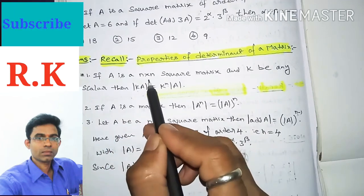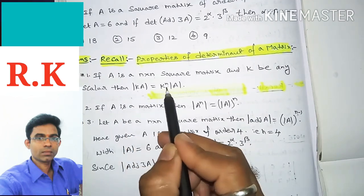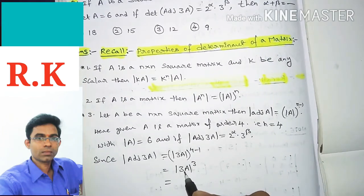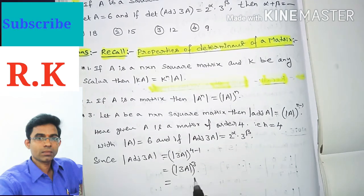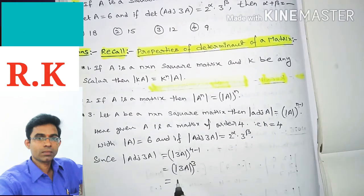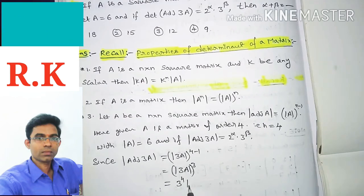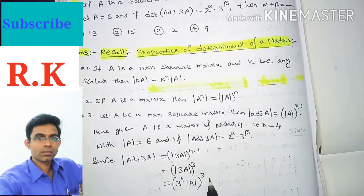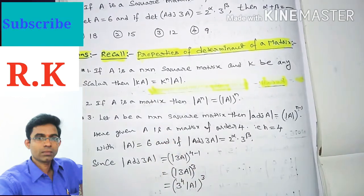By using the first property — whenever A is a matrix of order n and k is any scalar, det(kA) equals k^n times det(A) — here A is a matrix of order 4 and 3 is a scalar. So det(3A) whole cube can be written as 3^4 times det(A), all whole cube.